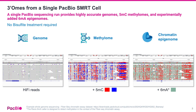PacBio SMRT sequencing enables multi-omic insights from a single SMRT cell. A single sequencing run can produce highly accurate genomes, 5mC methylomes, and experimentally added human 6mA epigenomes, all without the need for bisulfite treatment.